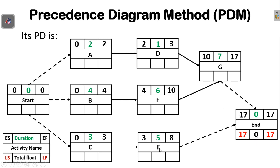Since both activities F and G emerge from the same end node, their late finish time is the late start of the end activity, which is 17. For activity F, late start is 17 minus 5, giving 12, and the float is 17 minus 8, which is 9. For activity G, late finish is 17, late start is 17 minus 7, giving 10, and the total float — the difference between late start and early start — is zero.